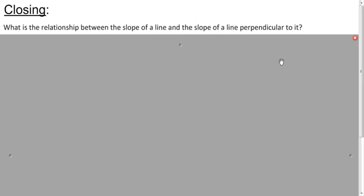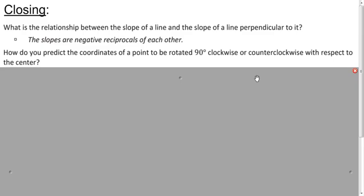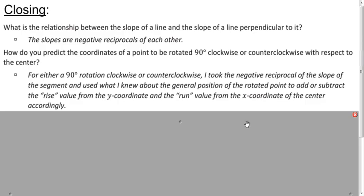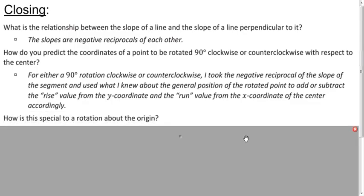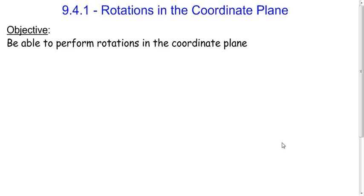So what's the relationship between the slope of a line and the slope of the line perpendicular to it? They're negative reciprocals. And how can we predict the coordinates of a point rotated 90 degrees clockwise or counterclockwise? Take the negative reciprocal to find the slope of the perpendicular line, then use that to add or subtract from the coordinates. For the special case of rotation about the origin: counterclockwise gives (negative B, A); clockwise gives (B, negative A). In this lesson, we learned how to perform rotations in the coordinate plane. Thank you for watching this video.